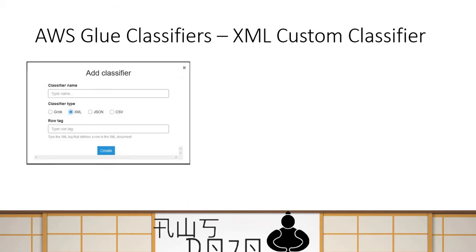So how do you define an XML classifier? When you go to add an XML classifier, you have to select your classification type as XML and then provide the row tag. The row tag is an XML tag which you want to use as row data. It assumes that the row tag is repeating itself in the XML document, and based on that row tag, whatever attributes or sub-tags come inside it are classified as attributes, while the row tag itself is treated as one row.